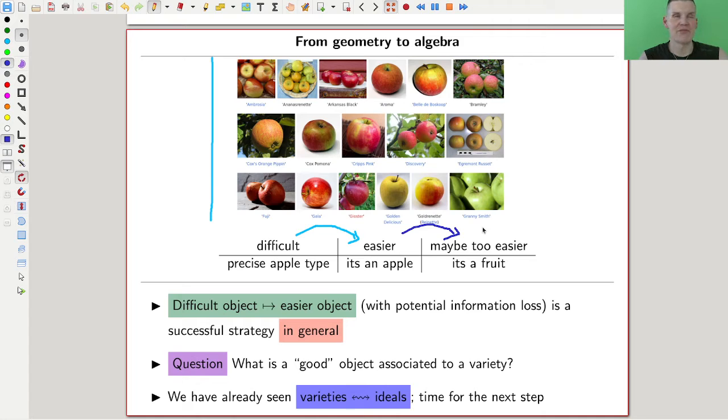If you think about assigning a dimension to a space, then that dimension is certainly easier to think about than the space itself, but there's also a lot of information loss involved. So finding a good balance is key. What is a good object associated to a variety? We like varieties here. If at this point you don't like varieties, I certainly have messed up my job.